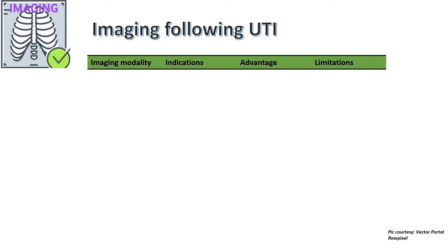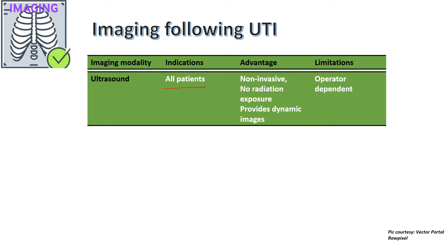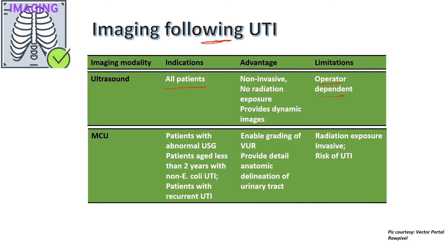Regarding indications for imaging following UTI: Ultrasound should be done in all patients after UTI. Its advantages are that it is non-invasive, has no radiation exposure, and provides dynamic images, but it is operator dependent — for example, one operator may grade it as grade 2 VUR while another may say grade 3. MCU is done in patients with abnormal ultrasound, patients aged less than 2 years with non-E. coli UTI, and patients with recurrent UTI. MCU enables grading of VUR and provides detailed anatomic delineation, but has radiation exposure and is invasive, carrying a risk of iatrogenic UTI.